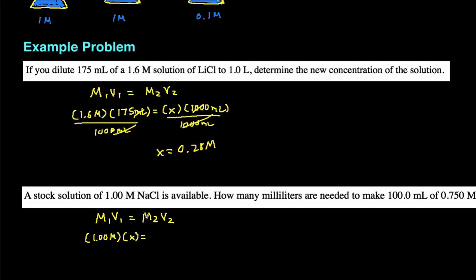And then M2 is our final molarity after diluting, and that's going to be 0.75 molar. And then V2 is the final volume, which is 100 milliliters.